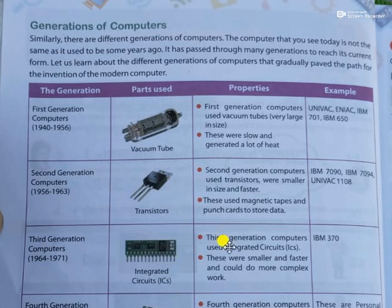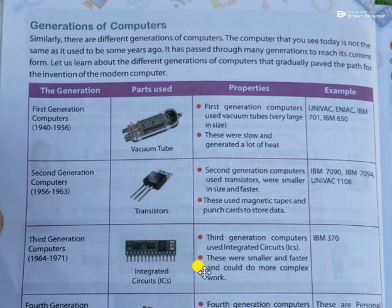In third generation computers, instead of transistors, ICs were used for processing. ICs were very smaller in size, very faster in work, and most importantly they were very slow to get heated and could be cooled down quickly. So that was the best thing about third generation computers. Obviously the storage capacity was much better too. The best example of third generation computer is IBM 370.